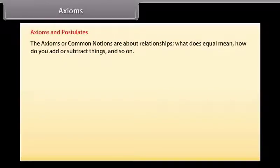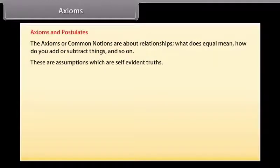Axioms. Euclid describes axioms and postulates which we will discuss here. The axioms or common notions are about relationships. What does equal mean? How do you add or subtract things? And so on. These are assumptions which are self-evident truths.